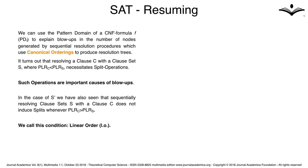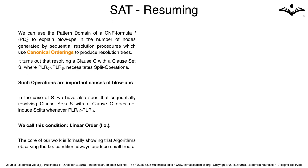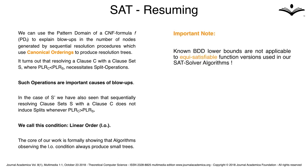The core of our work is formally showing that algorithms observing the LO condition always produce small trees. A subtle point: some important boolean functions like multiplication are known to possess exponentially sized BDDs, which appears to contradict our results. However, a thorough investigation shows that all known lower bounds relate to the intrinsic nature of those particular functions, which is disturbed when equisatisfiable versions are used inside solvers — because a large number of input variables are introduced in those versions which have no meaning for the original function. A special section in the paper is dedicated to explaining this.